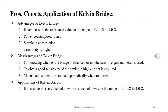The advantages of the Kelvin double bridge are: it can measure resistance in the range of 0.1 micro ohm to 1 ohm, it requires very low power, it is simple in construction, and it offers very high sensitivity. The disadvantages are: a sensitive galvanometer is required to determine bridge balance, a high current is needed for good sensitivity, and manual adjustments must be made periodically. The Kelvin double bridge is typically used for measurement of very low unknown resistance values in the range of 0.1 micro ohm to 1 ohm.